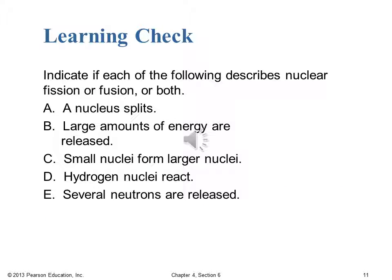Let's round out chapter four with a final learning check. We're going to indicate if each of the following describes nuclear fission, fusion, or both. A: a nucleus splits. B: large amounts of energy are released. C: small nuclei form larger nuclei. D: hydrogen nuclei react. E: neutrons are released. For each of those, determine if it describes fission, fusion, or both. Pause the video, and then we'll see how you did.